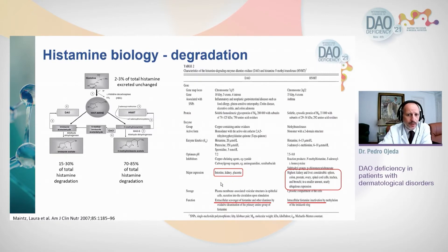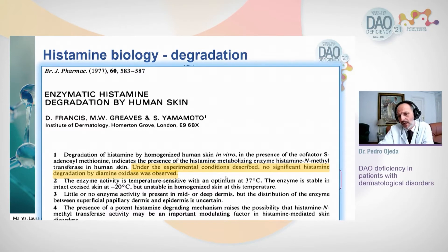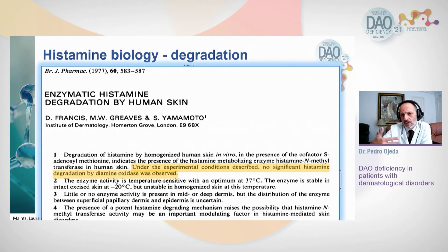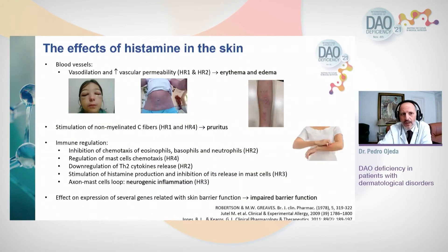Regarding histamine degradation: DAO degrades histamine extracellularly, for example in the kidney and placenta. I wanted to mention one study that used human skin homogenate and found that the totality of histamine in the skin was degraded not through DAO but through N-methyltransferase. So DAO didn't have a role in the degradation of histamine in the skin — which could be clinically relevant when we think about exogenous DAO degrading histamine on the skin.